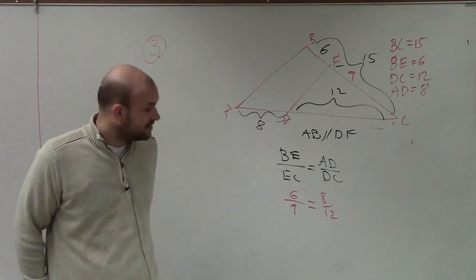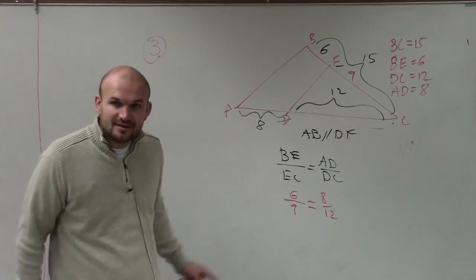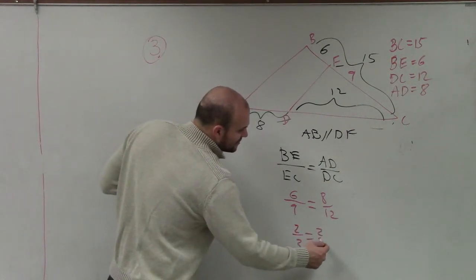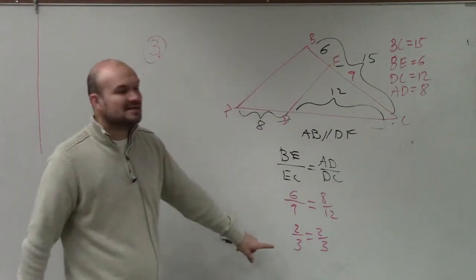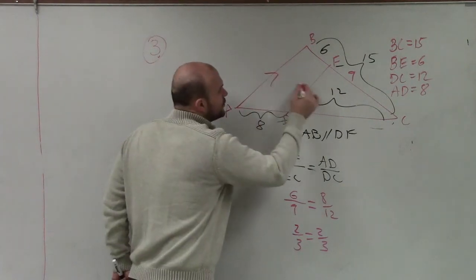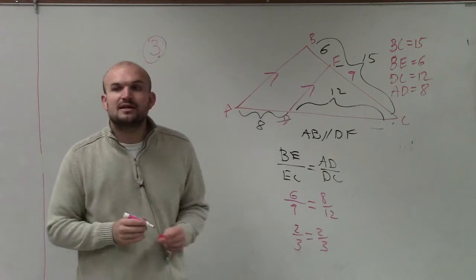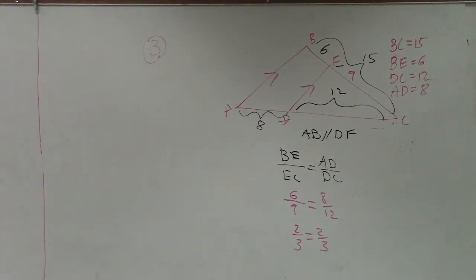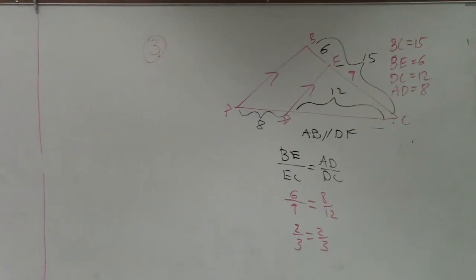You're right. Very good. They are equal. And the other way you can do it is just reduce them. 2 thirds is equal to 2 thirds. So since these are equal, I can now prove by using the converse that those are parallel lines.